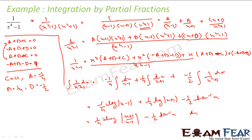It was not that difficult a question. The key was to convert the integrand into the partial fraction form: a by (x minus 1) plus b by (x plus 1) plus (cx plus d) by (x squared plus 1), find the values of a, b, c, and d, and then get the answer.